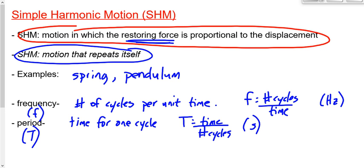The equation for period is time over the number of cycles, and the units are seconds. These appear on the data sheet. One equation that relates the two together and does not appear on the data sheet is T equals one over f.